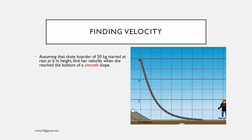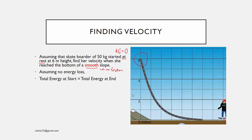There are two things to consider. First, she started at rest, which means KE is 0 at the top of the slope. Second, it is a smooth slope, meaning there is no friction — so no energy is lost while she goes down. Therefore, the total energy at the start equals the total energy at the end.